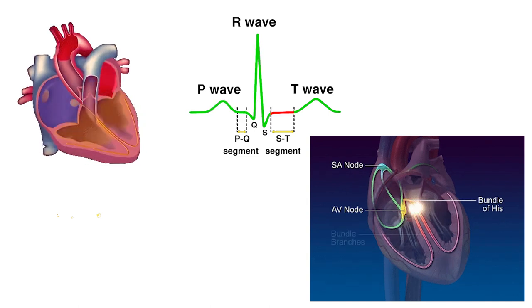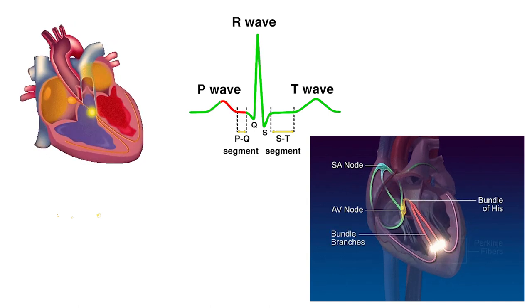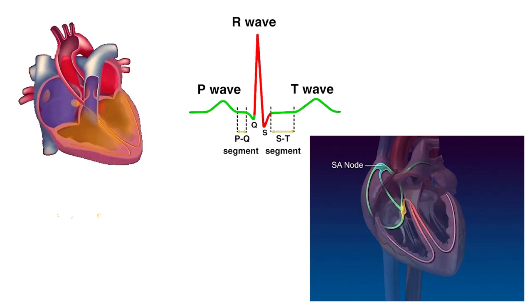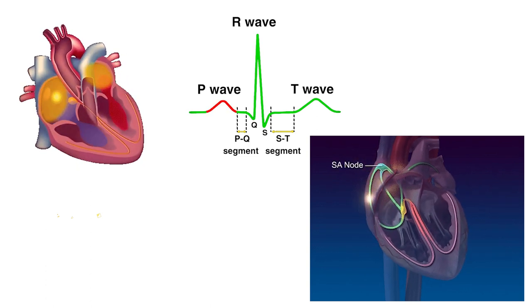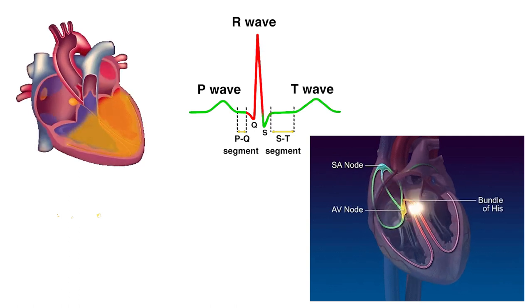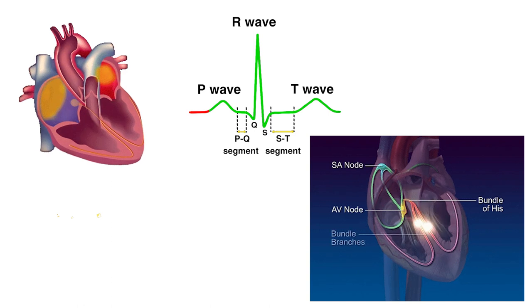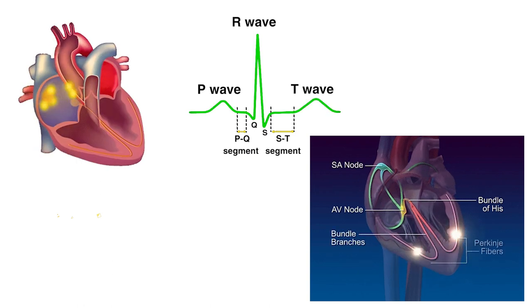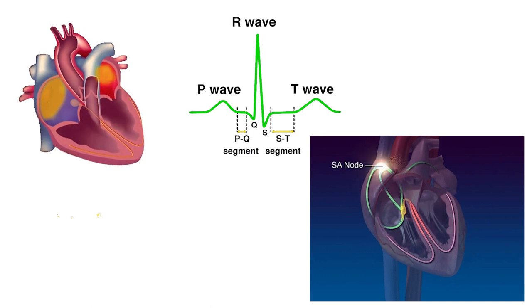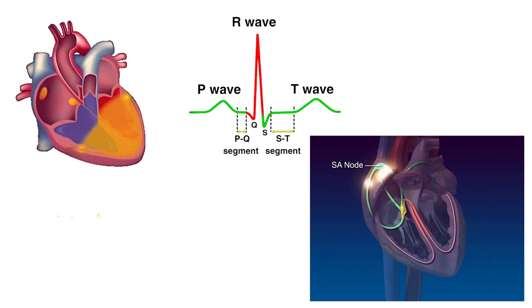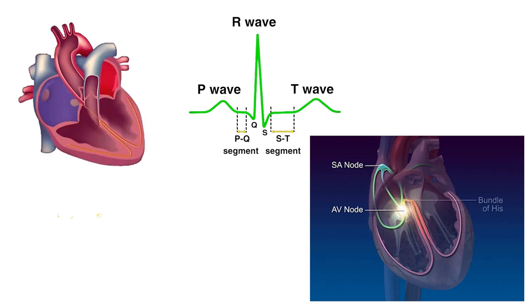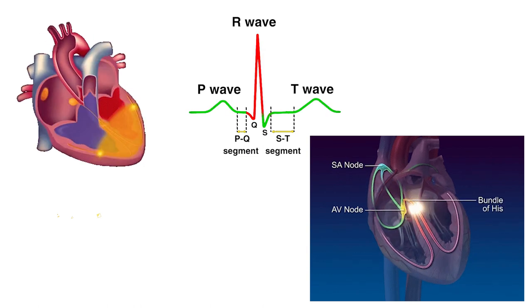There is a flat line following the P wave called the PQ segment, which is the signal entering the AV node. The pause after the P wave allows both atria to pump their entire volume of blood before the signal leaves the AV node, entering into the bundle of His, down the bundle branches, and into the ventricular walls. The ventricles then depolarize and contract, which is represented by the QRS segment.